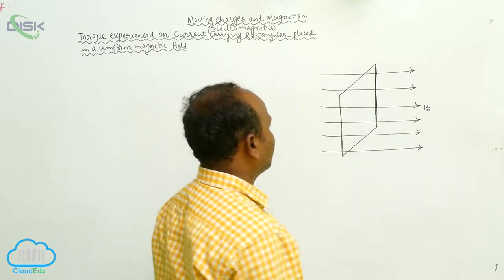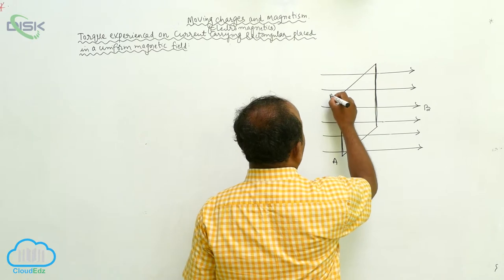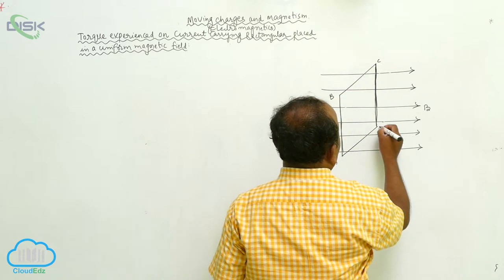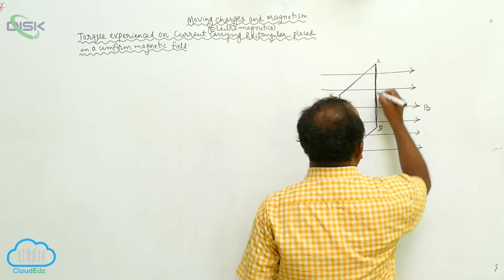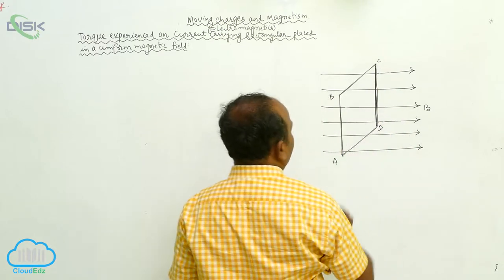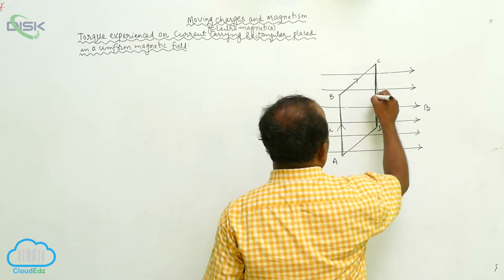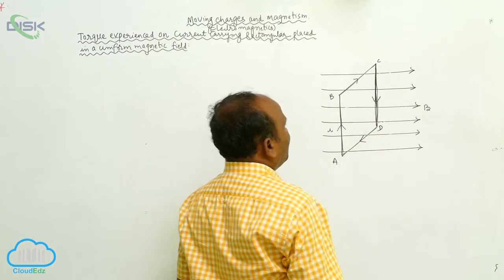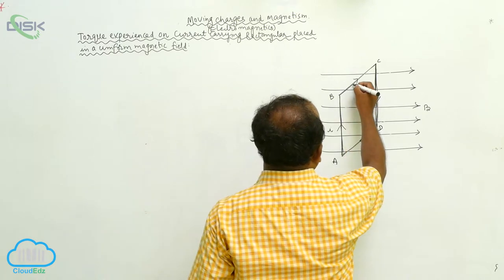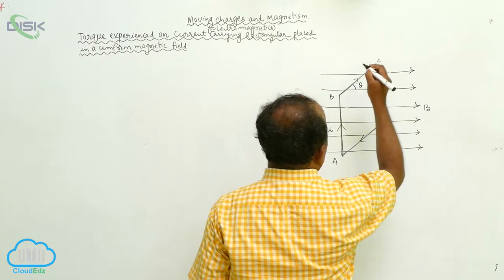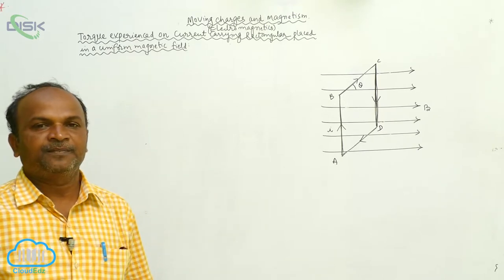This is the rectangular coil. The name of the rectangular coil is A, B, C, D. The current passing through this coil is I. That coil is placed with respect to angle theta — the coil is making an angle theta with respect to the magnetic field.